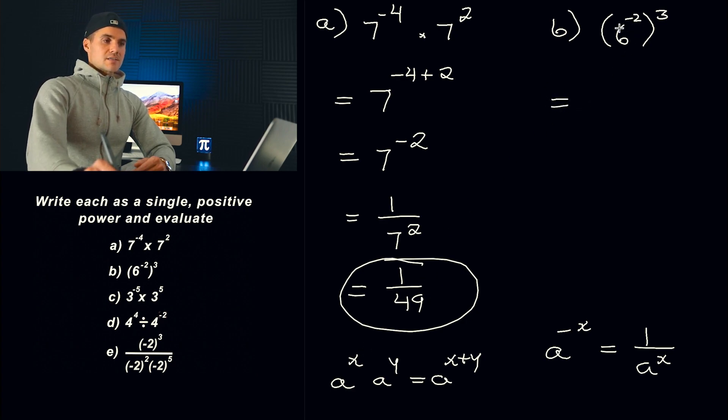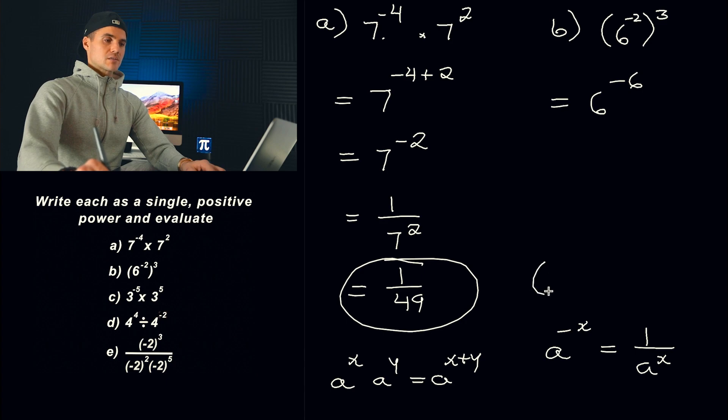Now in part B here, you got (6^(-2))^3. Now whenever there's exponents right beside each other like this, what do you do? You multiply them. You don't add them, you multiply them. Notice the difference between this and this. There's no like 6 to the power of 3. If it was like that, then you'd be adding those exponents. But because there's no other base here, and the exponents are right beside each other, you multiply them. The rule that you're basically using is if you got (A^x)^y, you are basically just multiplying the exponents.